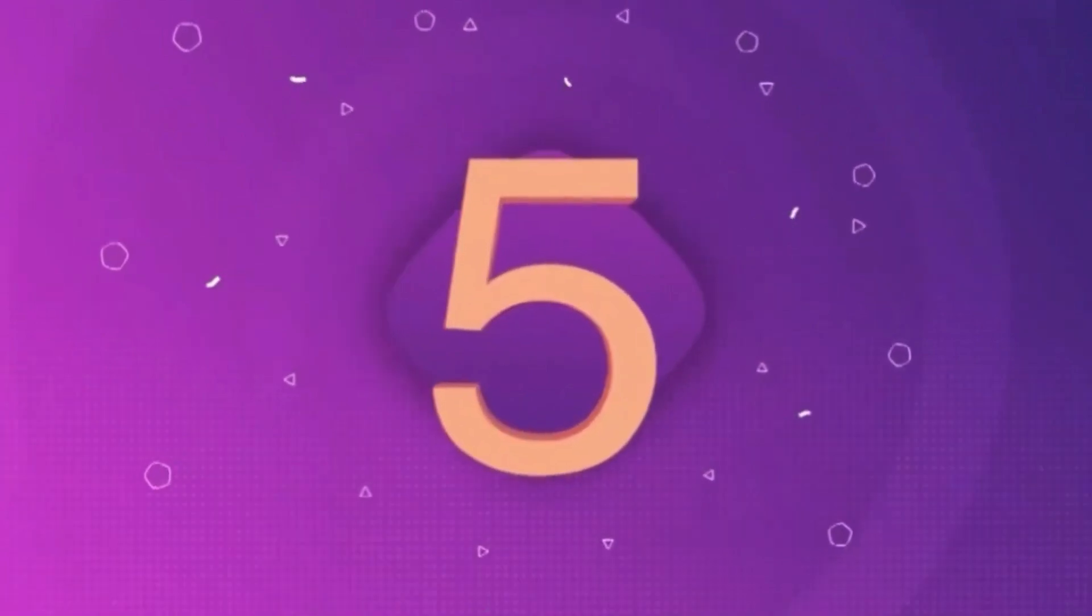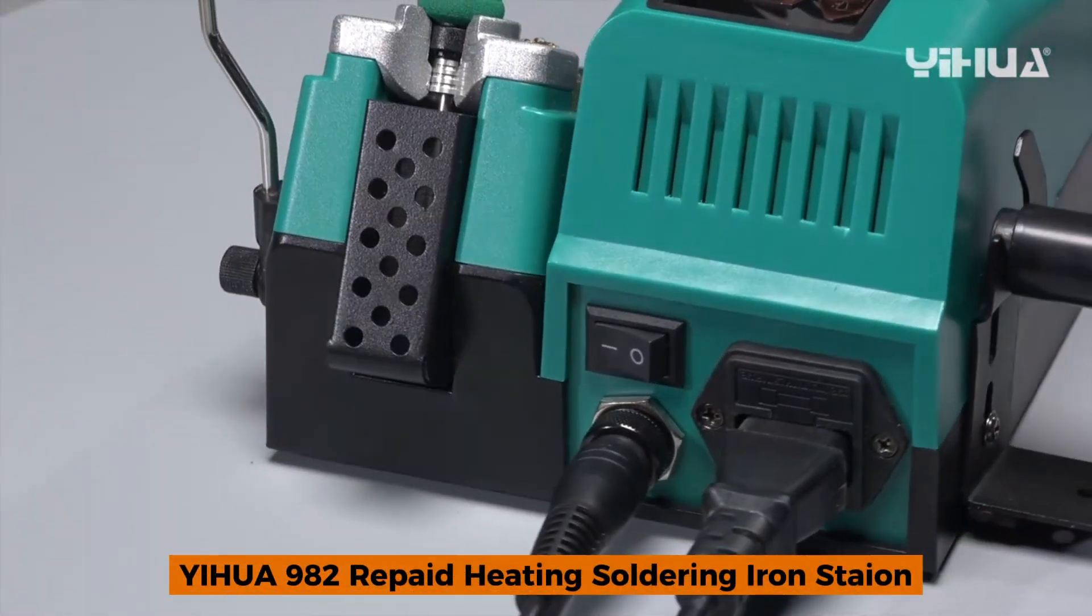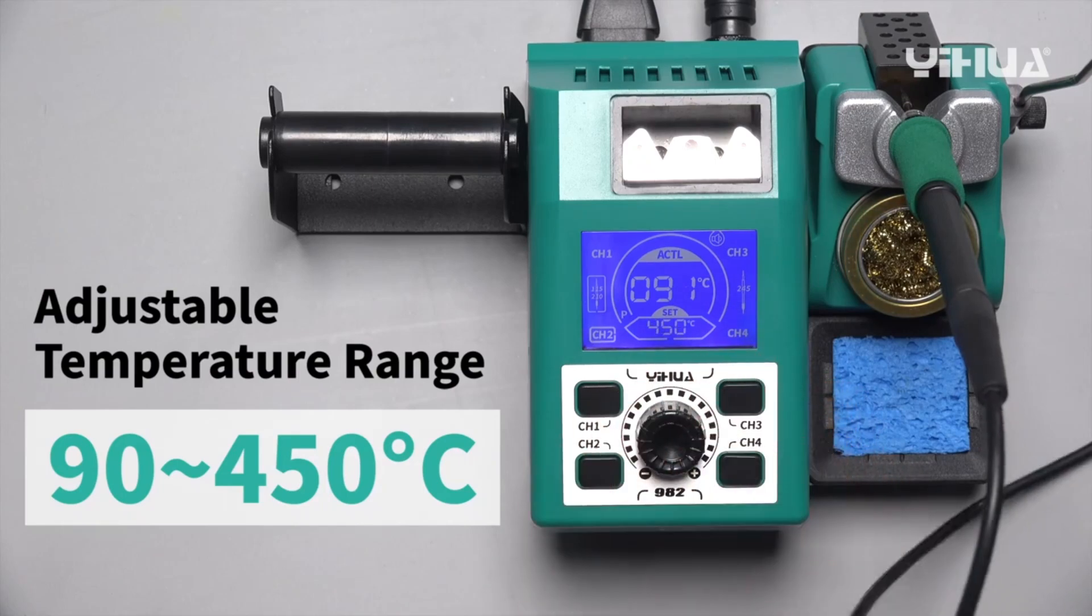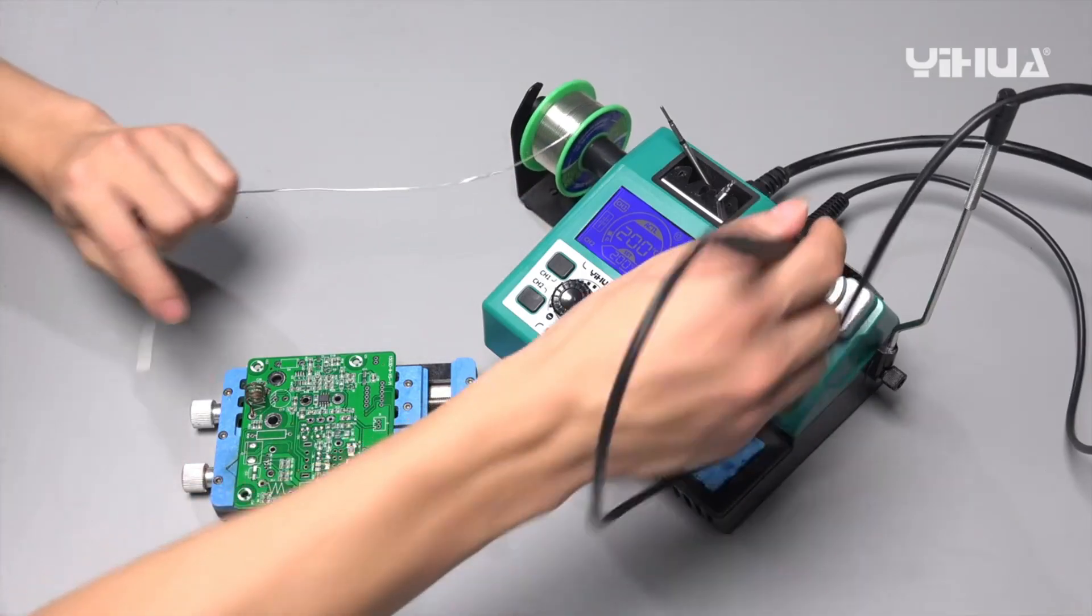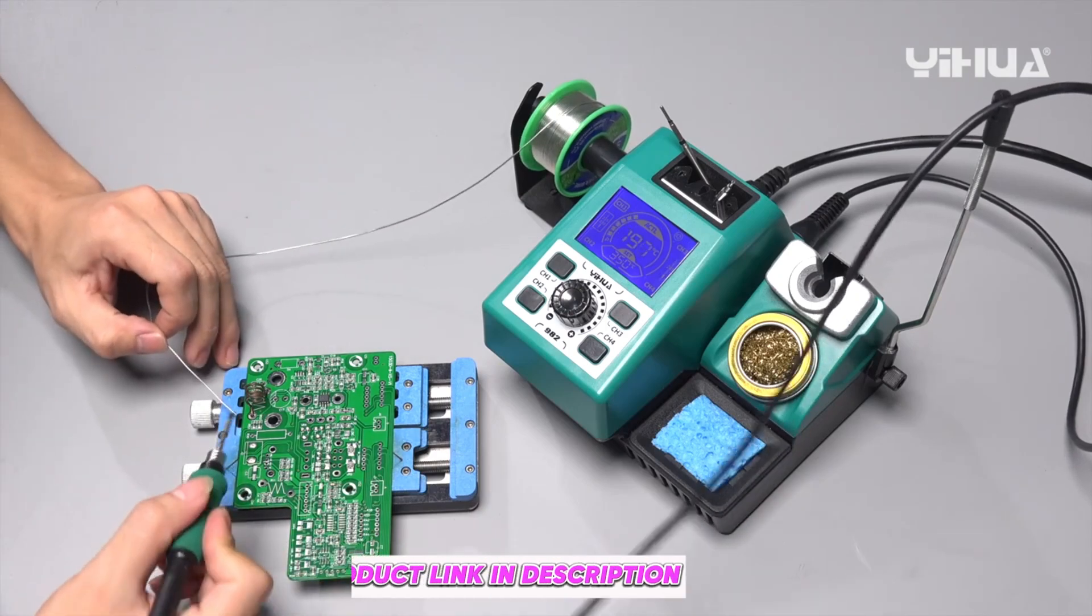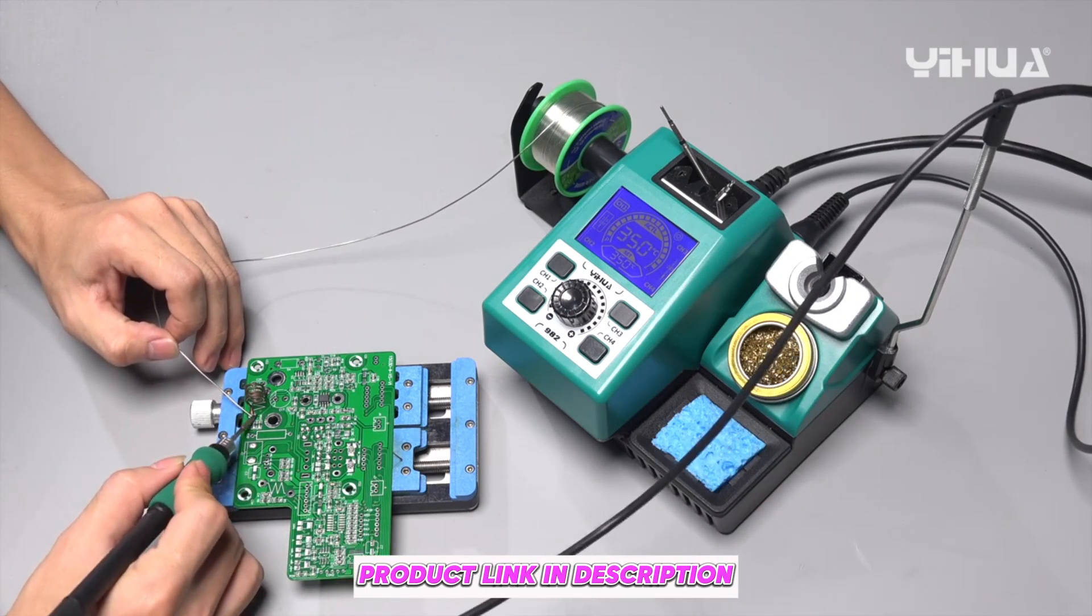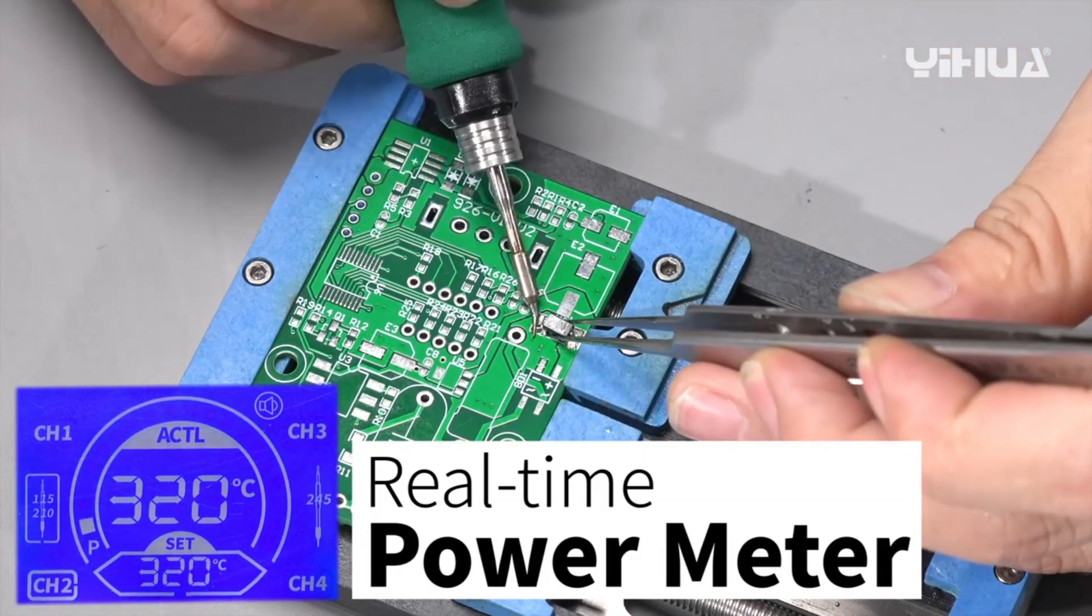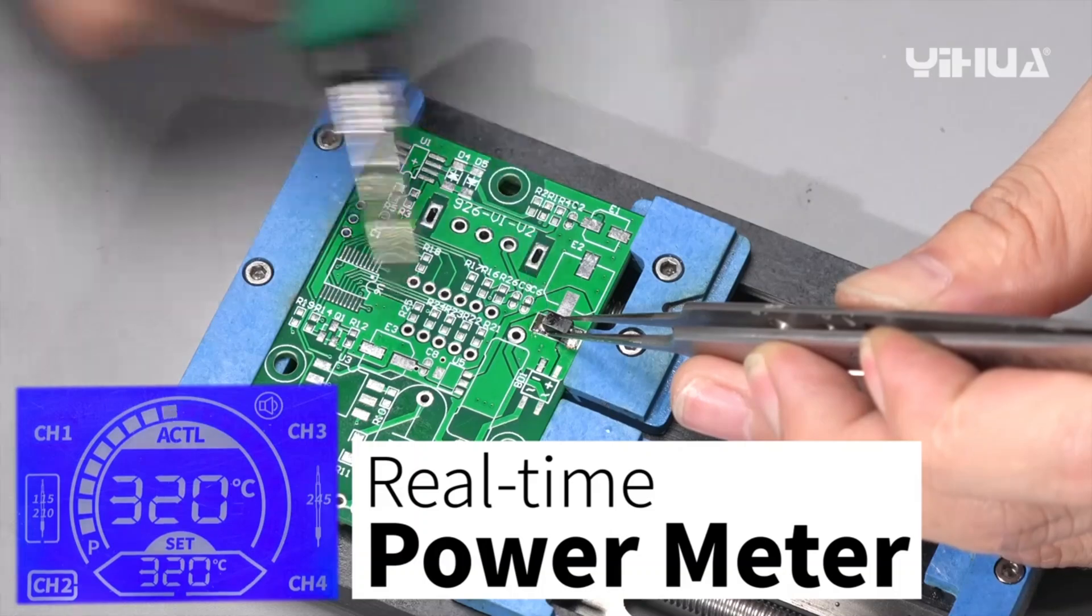Number 5 Yahua 982 Soldering Station. The Yahua 982 offers rapid heating with a powerful, customizable setup. It's equipped to handle C2-10 solder iron handles, making it great for precise electronic repairs. With CE, FCC, and UL certifications, it's built for durability and safety.